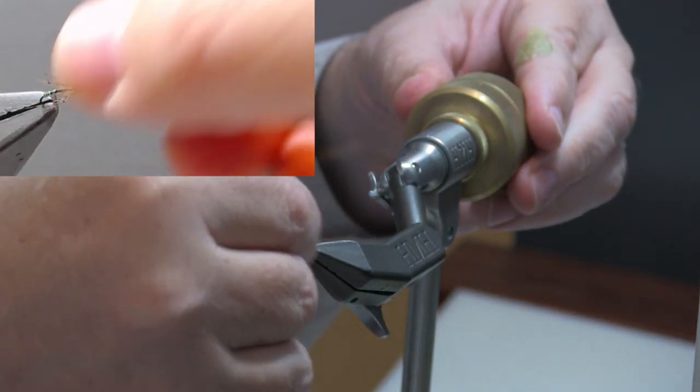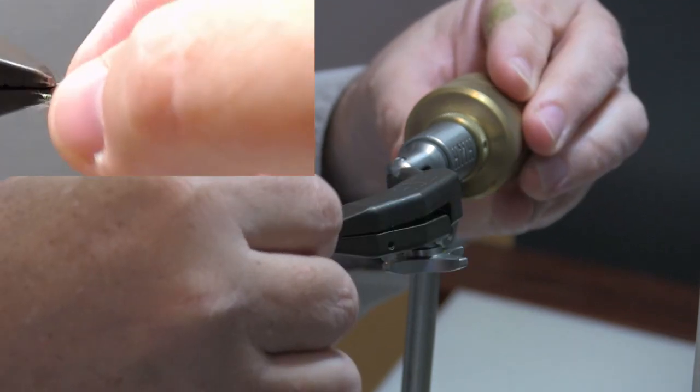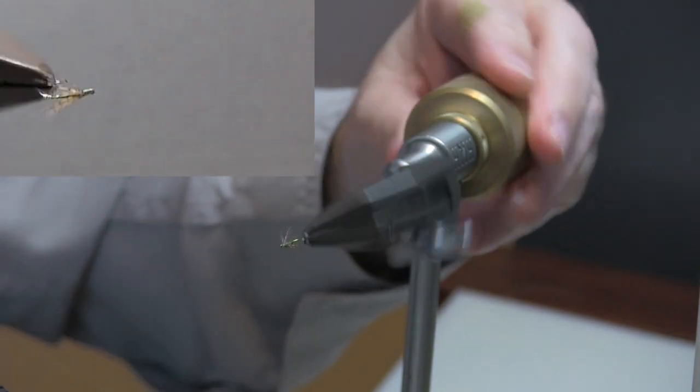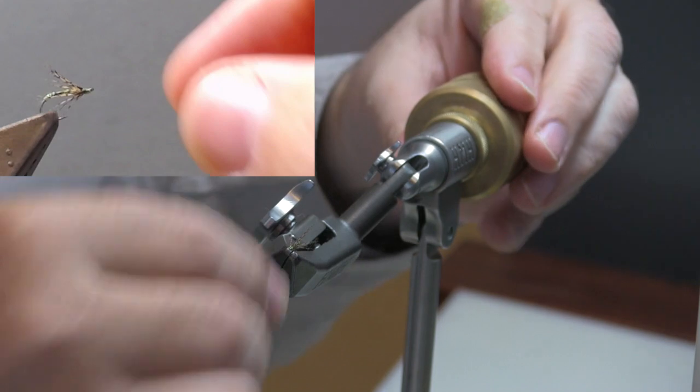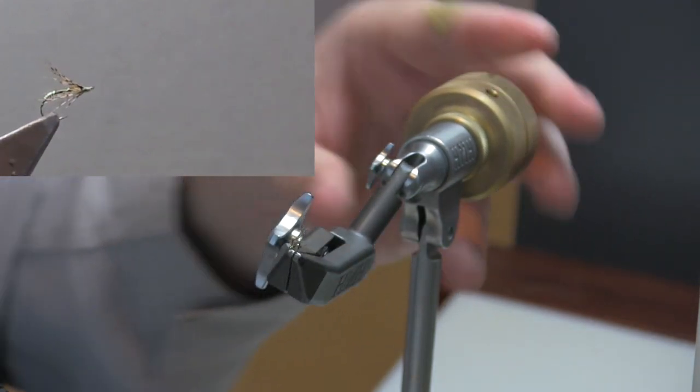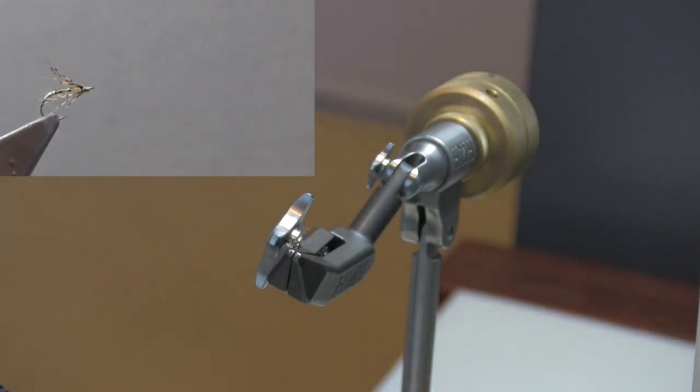I'm just going to take a final look at it. Make sure that I have even wraps of partridge all the way around. But that's the way I want the fly to look. And there's your partridge and olive.